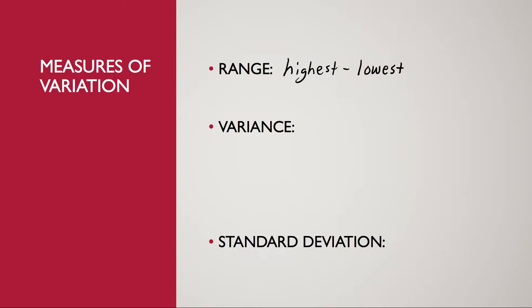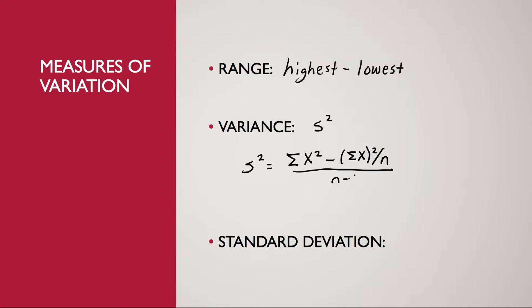For the variance, we're going to use the symbol S squared. S squared is going to stand for variance. The formula for variance is a formula that looks very difficult, but once we start working problems, I hope you'll see that the formula is not that hard to work with. I will give you this formula on your test, but you do need to know how to use the formula.